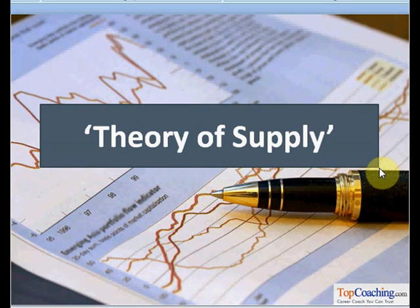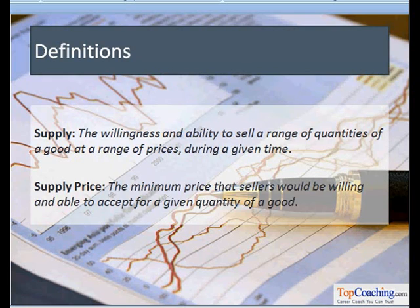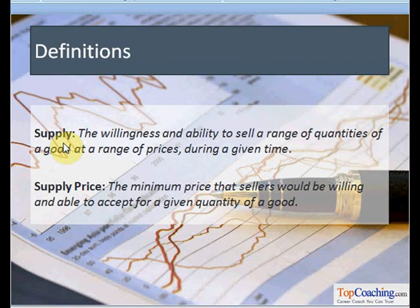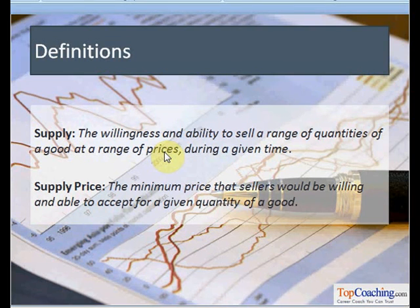The next topic is the theory of supply. Before discussing the theory of supply, we must first know what supply is. Supply can be defined as the willingness and the ability to sell a range of quantities of a good at a range of prices during a given period of time.